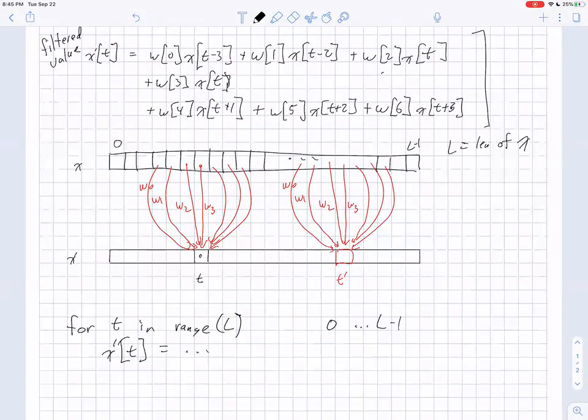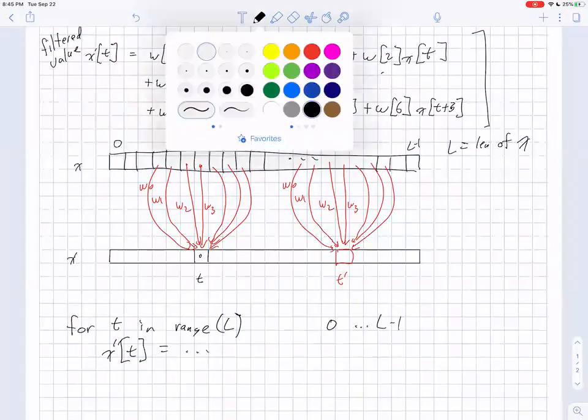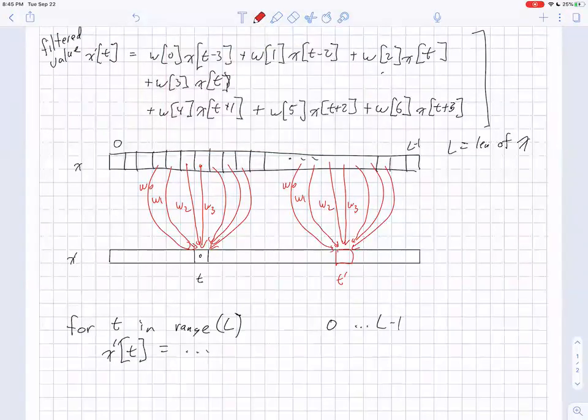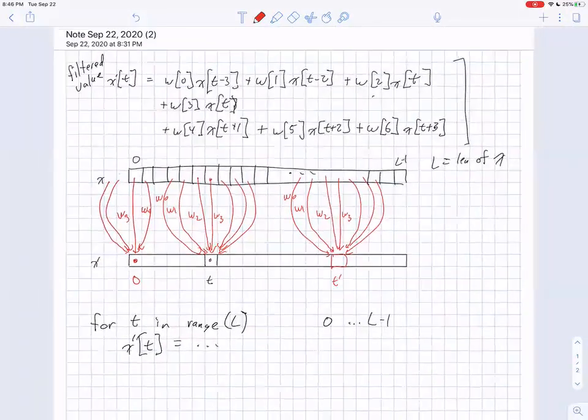The other thing is, the other question we have to answer is what happens when we try to compute this element right here? So at time zero, certainly I've got W3 here and W4 is right here, etc. But where does the W2 come from? And so we have to construct it from somewhere. W2, W1, and W0 have to come from somewhere. And the way that we're going to handle this is through padding.